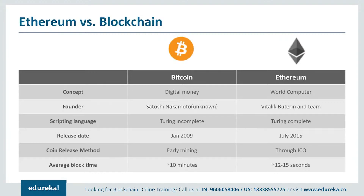Ethereum would be a decentralized computing system where all resources and computing effort would be shared — the world's first decentralized distributed computing system. The original blockchain was conceptualized in 2008 with an initial release in January 2009. Ethereum's conceptualization started in 2013 and the first implementation came out in July 2015.